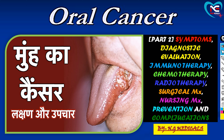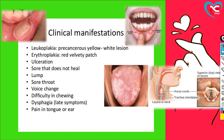Now we are going to see part 2, in which we are going to discuss signs and symptoms, diagnostic evaluation, immunotherapy, chemotherapy, radiotherapy, surgical management, nursing management, prevention, and complications of oral cancer. Just like in the last one, we discussed the anatomy and physiology of the mouth, introduction, definition, types, TNM classification, staging, etiological and risk factors, and pathophysiology. So let's see the next one.